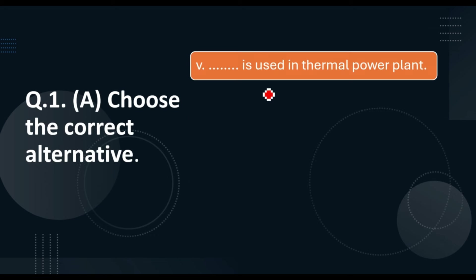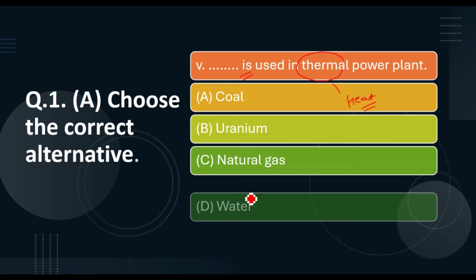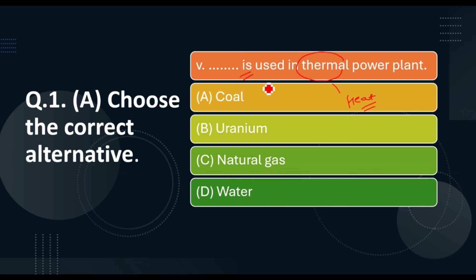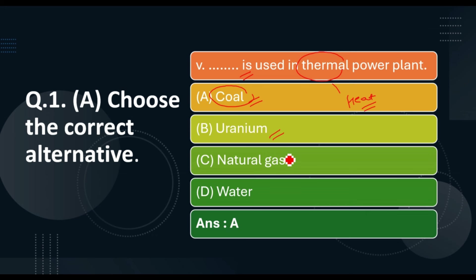Question five: Which term is used for the source of fuel in a thermal power plant? The word 'thermal' means heat. Options to get heat are coal, uranium, natural gas, or water. In a thermal power plant, coal is used to heat water. Uranium is used in a nuclear power plant and water in a hydroelectric power plant. Therefore the correct answer is option A, coal.